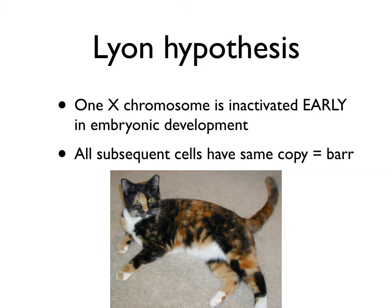The Lyon hypothesis refers to the independent, random decision each cell makes when inactivating one X chromosome. Not all 100 cells inactivate the exact same chromosome — some inactivate the X from the mother, some inactivate the X from the father. So every female human — and in this illustration, every female cat — is a chimera, in that different parts of their body have different genetic composition.